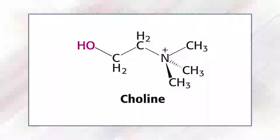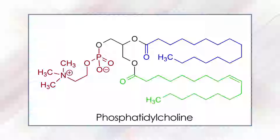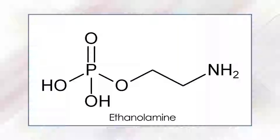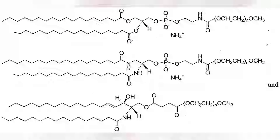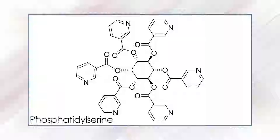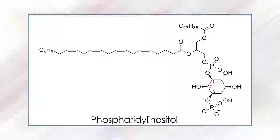Instead, membrane phosphoglycerides have an additional group linked to the phosphate — most commonly choline forming phosphatidylcholine, ethanolamine forming phosphatidylethanolamine, serine forming phosphatidylserine, or inositol forming phosphatidylinositol. Each group is small and hydrophilic and, together with the negatively charged phosphate, forms a highly water-soluble domain called the head group.